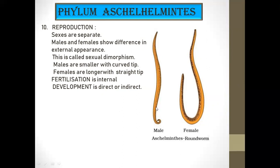The male produces sperm, and the sperm are deposited into the female body by a hair-like structure called the penial seta. By this structure, sperm are deposited into the body of the female, so fertilization is internal. The female then lays eggs, which hatch into larvae. In certain cases it develops directly into the adult form — so both direct and indirect development is present among different groups of Aschelminthes.